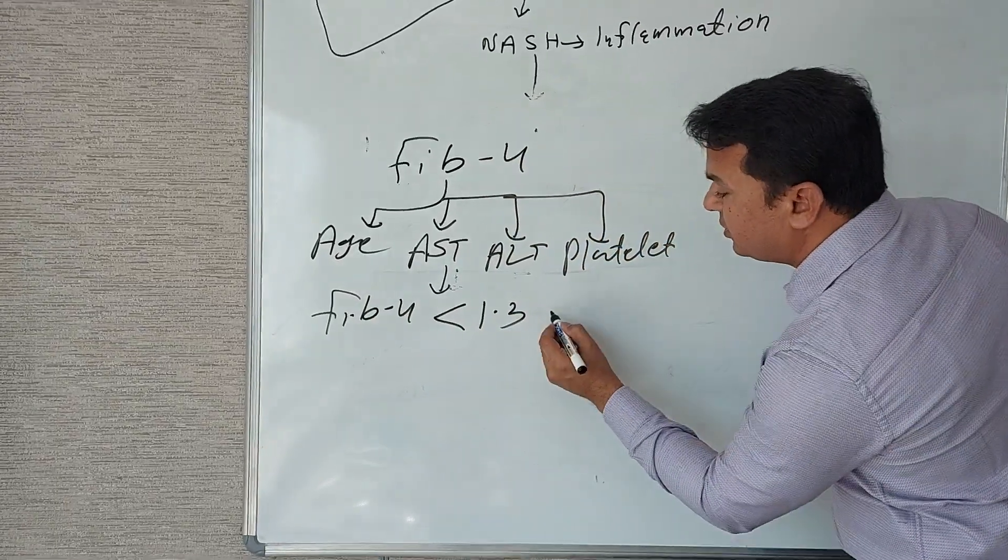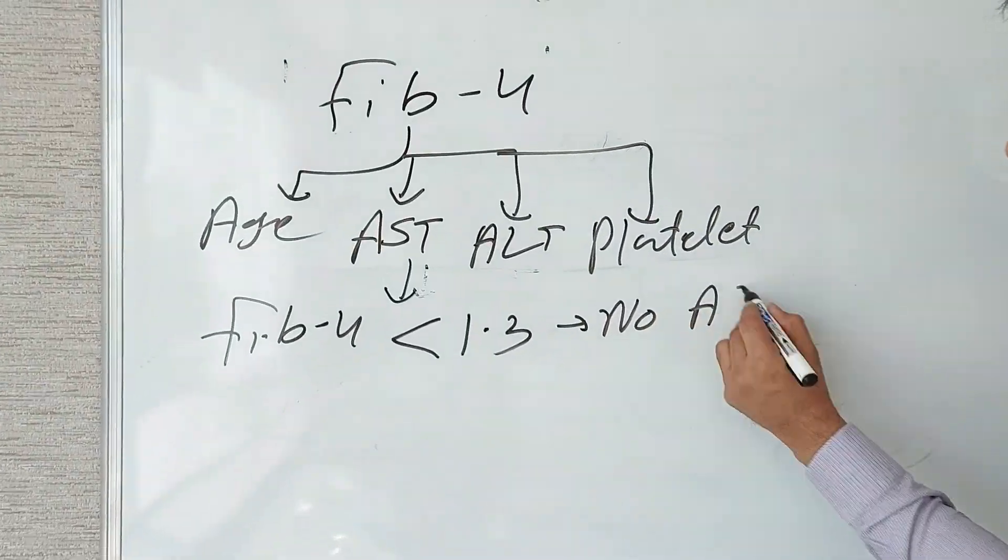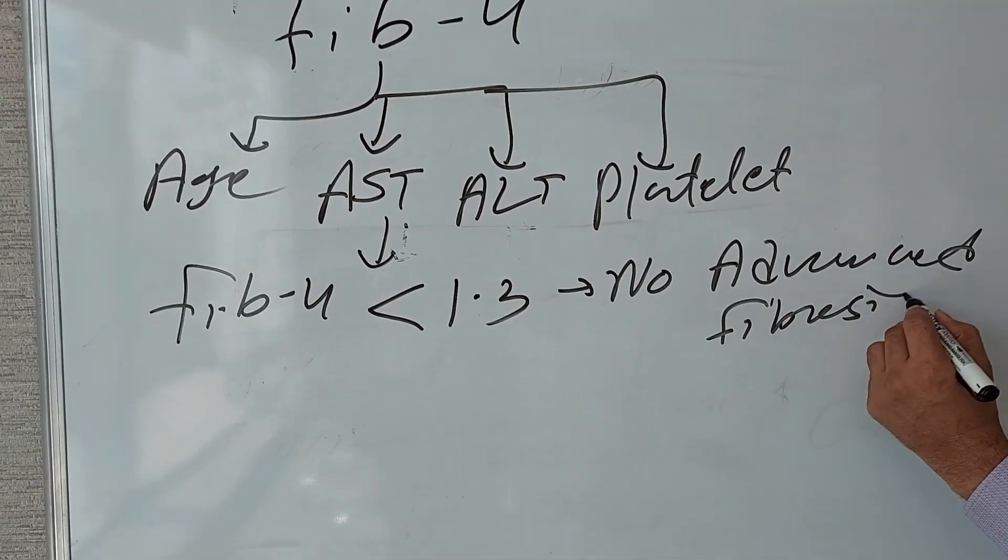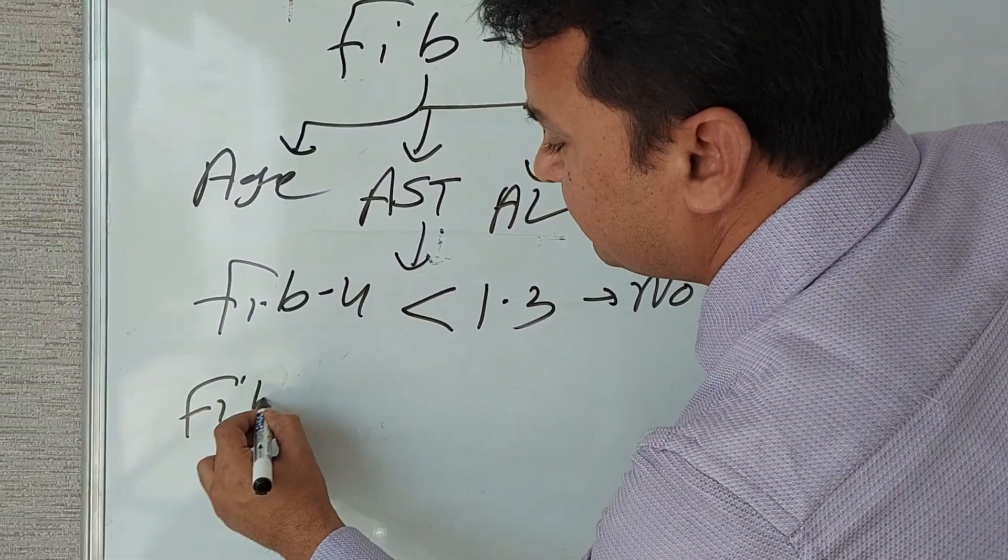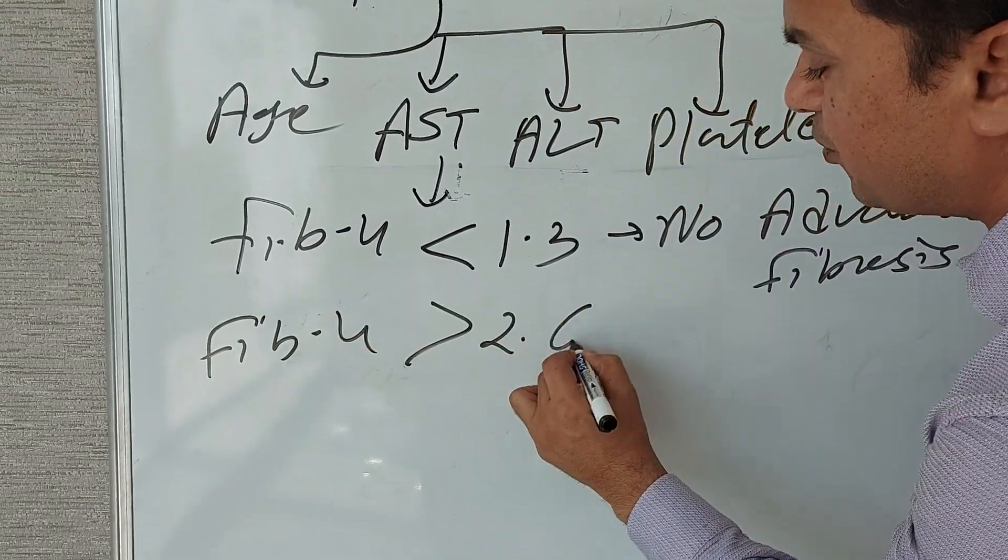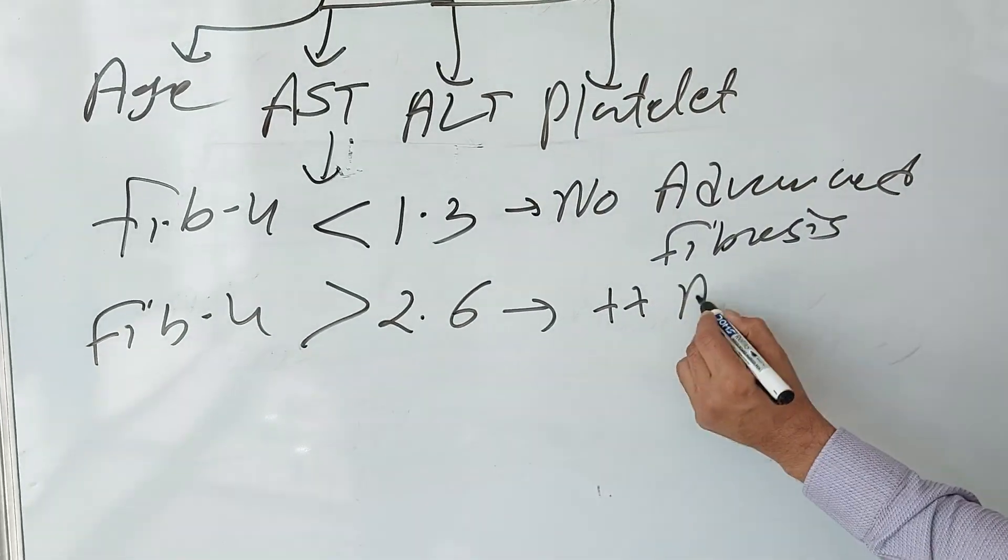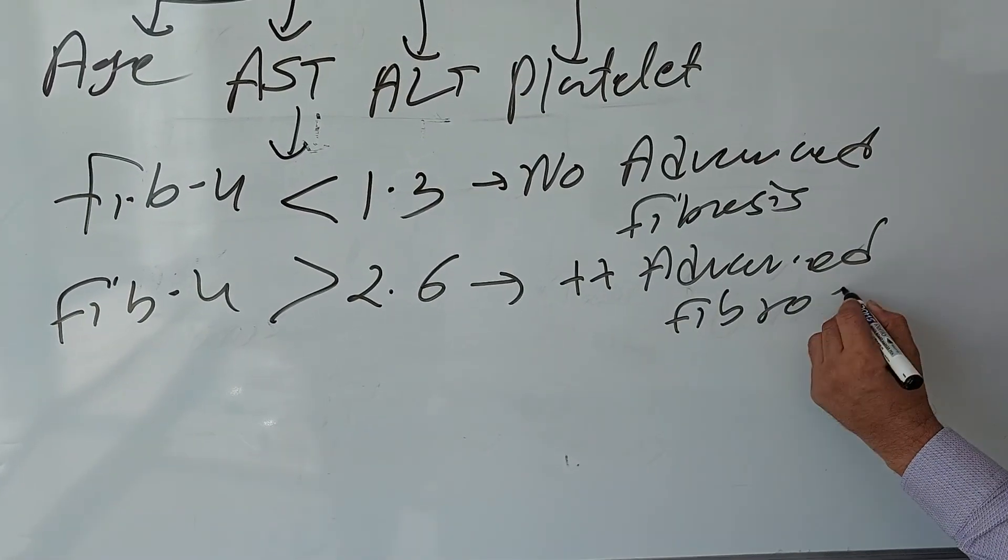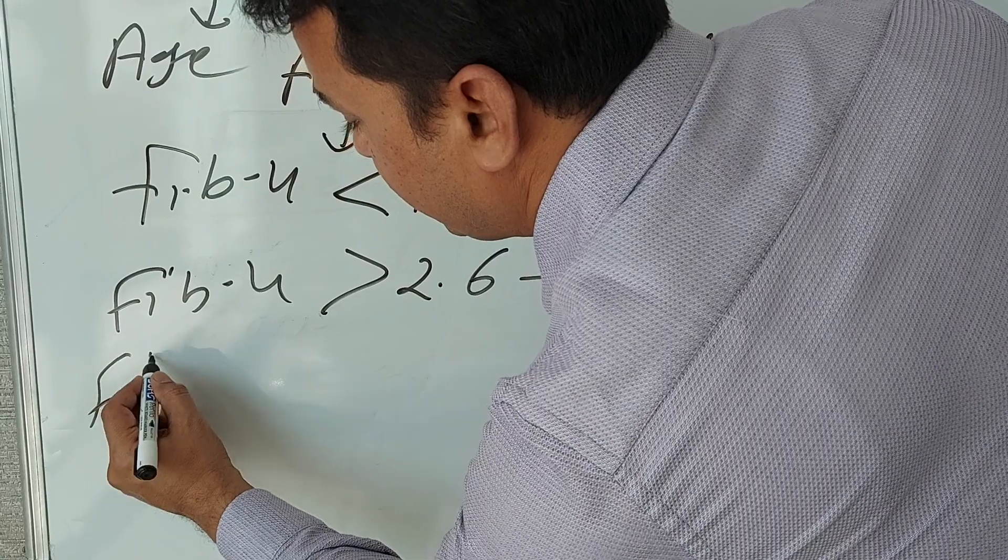the calculator, fit these four values, and you will get the FIB-4 scoring. If your FIB-4 score is less than 1.3, there is no advanced fibrosis. If FIB-4 is more than 2.6, there is presence of advanced fibrosis. And if it is between